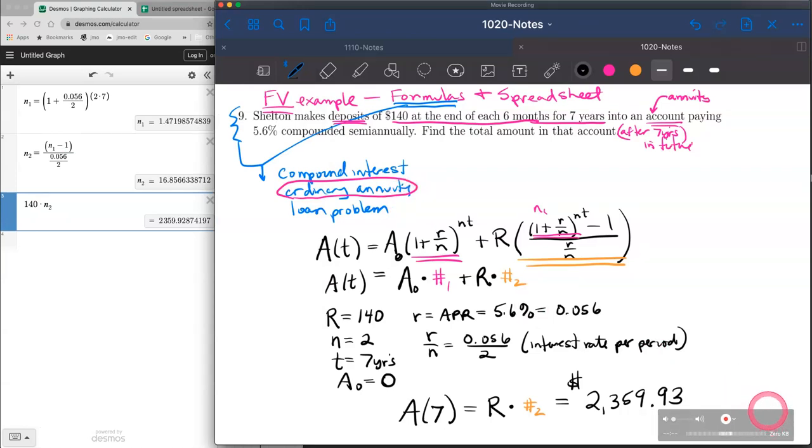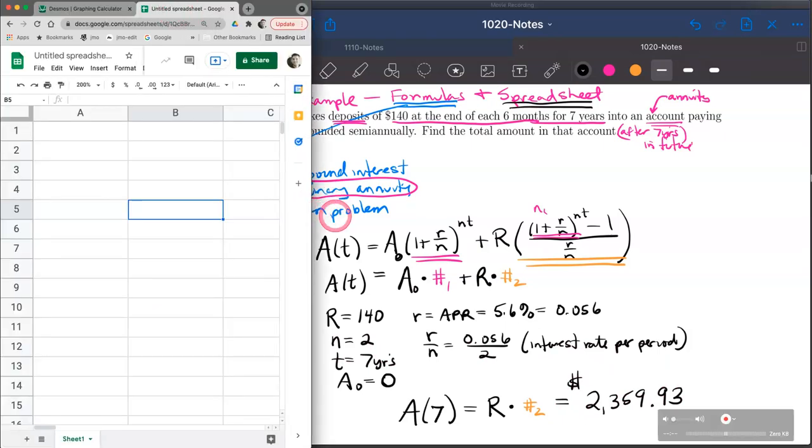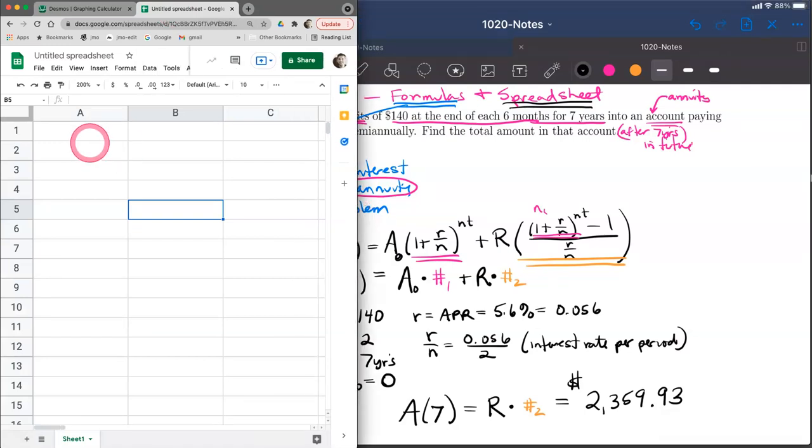There's also a way to compute the future value of an annuity using a spreadsheet tool, and that's what I'll demonstrate next. We should get the same number, $2,359.93. I'm going to use Google Sheets as the spreadsheet tool.